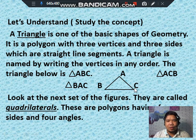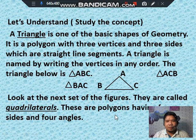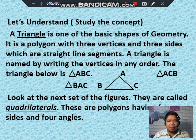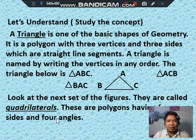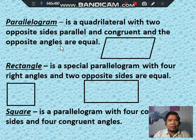Look at the next set of figures. They are called quadrilaterals. These are polygons having four sides and four angles. Remember, class, that quadrilaterals are polygons having four sides and four angles.